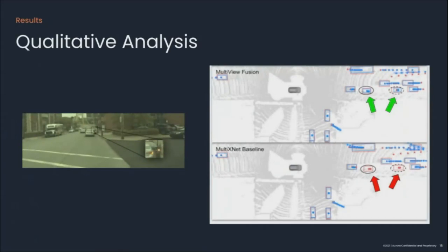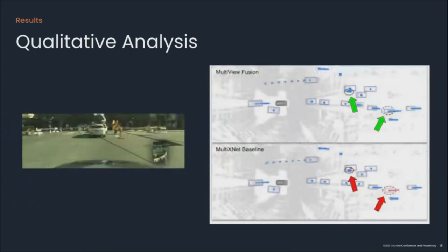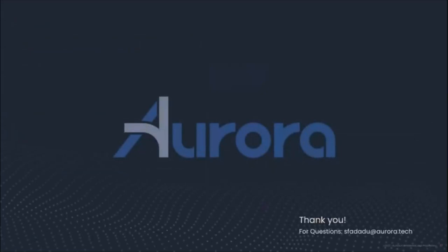Let us take a look at some interesting qualitative examples. We can see that the baseline missed two vehicles in front of the AV. However, LC-MV managed to retrieve these vehicles despite a high level of occlusions. This is another example where the proposed model improves over the baseline. Here, the baseline fails to detect both an occluded faraway vehicle and an occluded pedestrian. LC-MV, on the other hand, detects both actors, leading to improved safety of the AV and the surrounding actors.